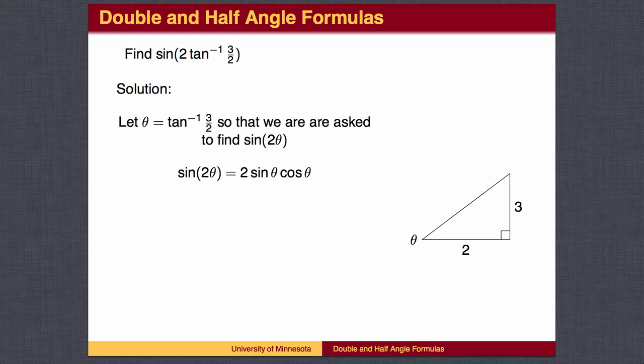Note that the inverse tangent function picks an angle from the right half of the unit circle, and is therefore either a first quadrant or fourth quadrant angle. In this case, it is a first quadrant angle since the tangent value is positive.